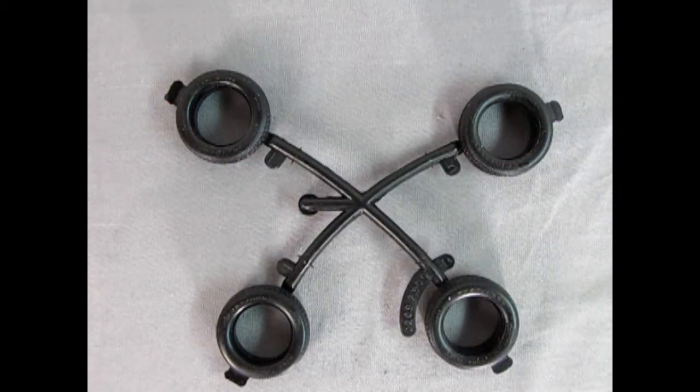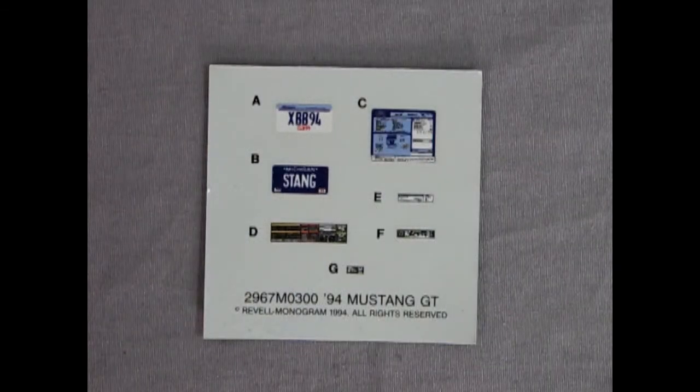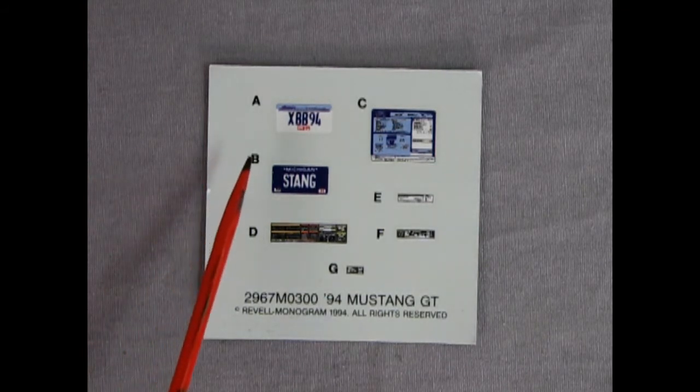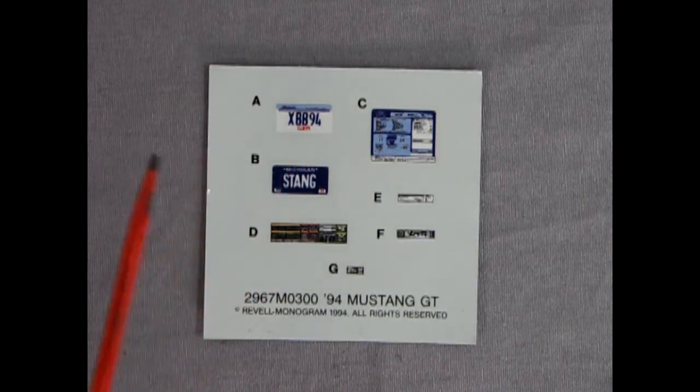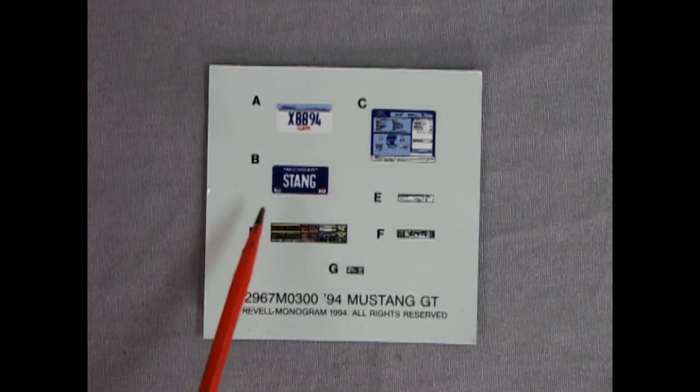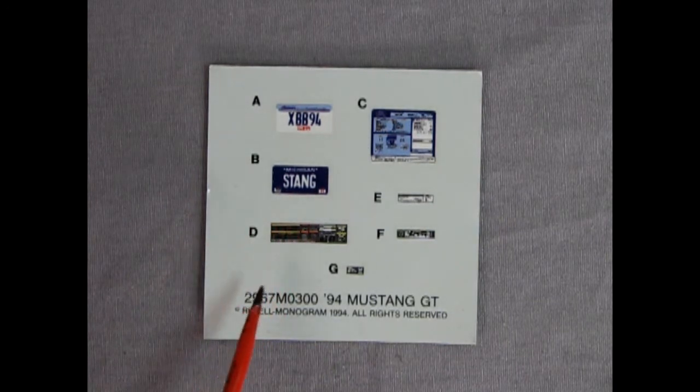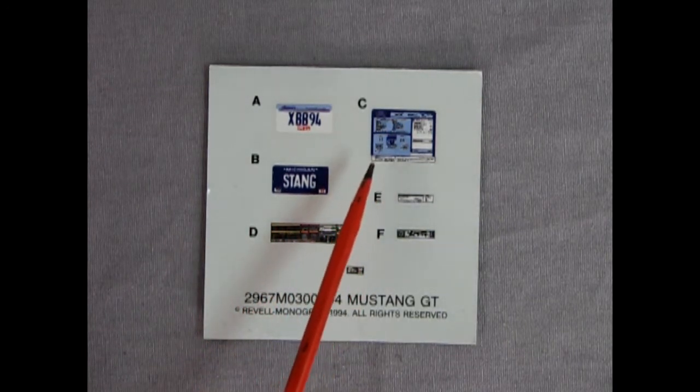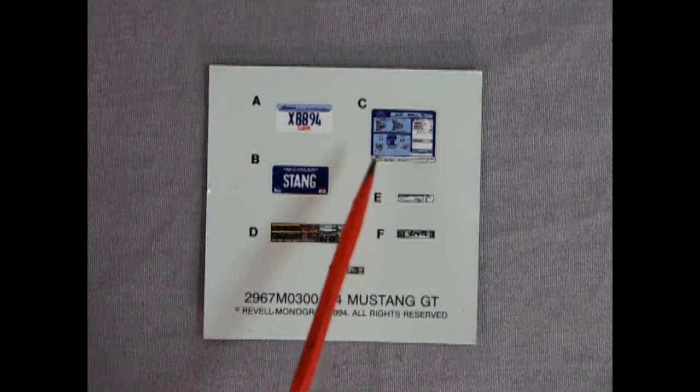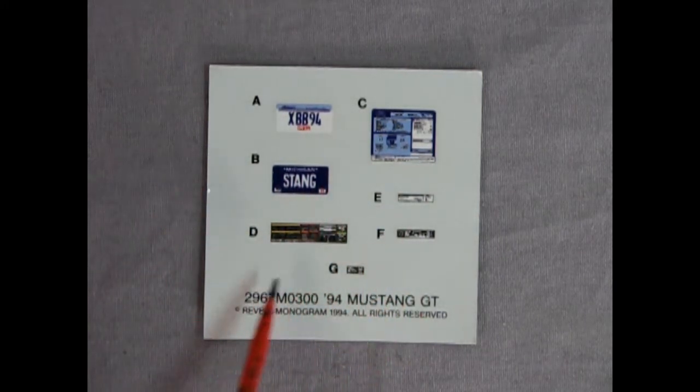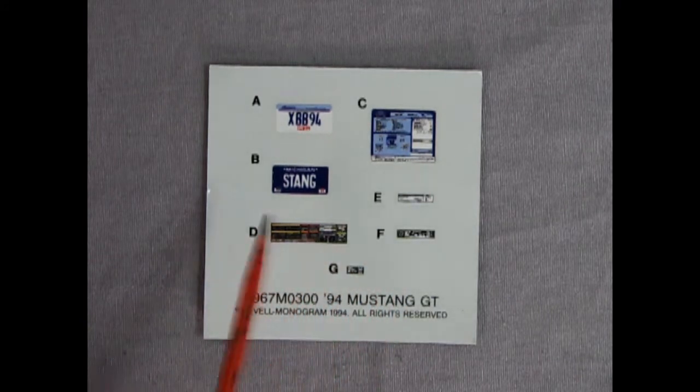So here we are again looking over the decal sheet. We've got an illinois XBB 94 license plate right there and then a michigan stang one down below. And then we've got a window sticker for our dealership that has all the info of the car on there, and then all the decals which go in the engine bay just to dress it up.